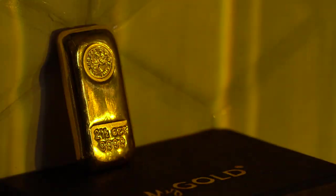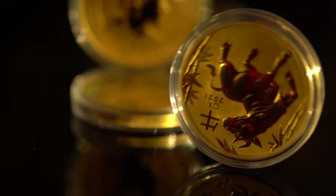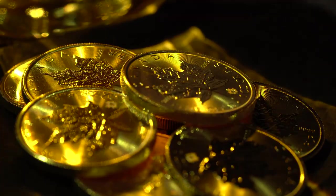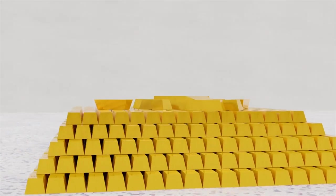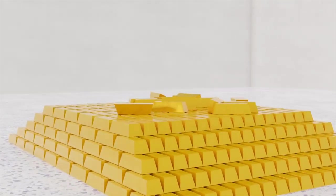A single gram of gold can be beaten into a sheet of one square meter, and an avoirdupois ounce into 300 square feet. Gold leaf can be beaten thin enough to become semi-transparent.